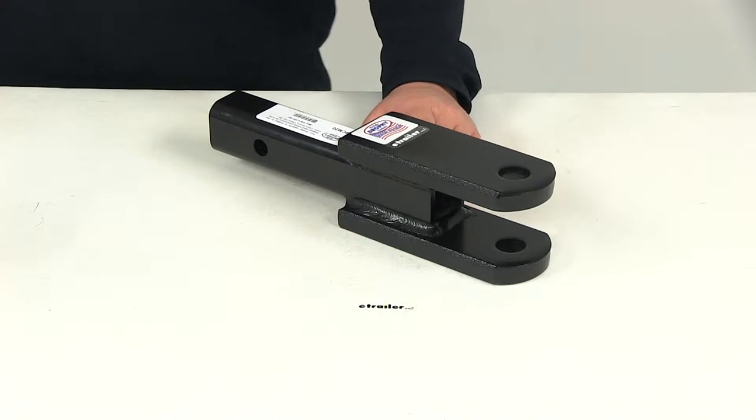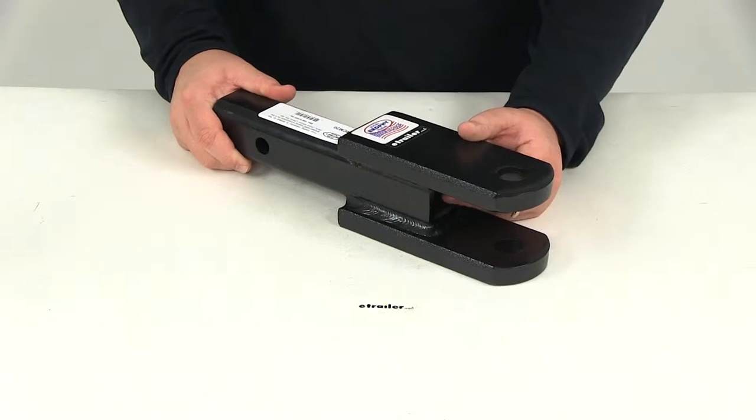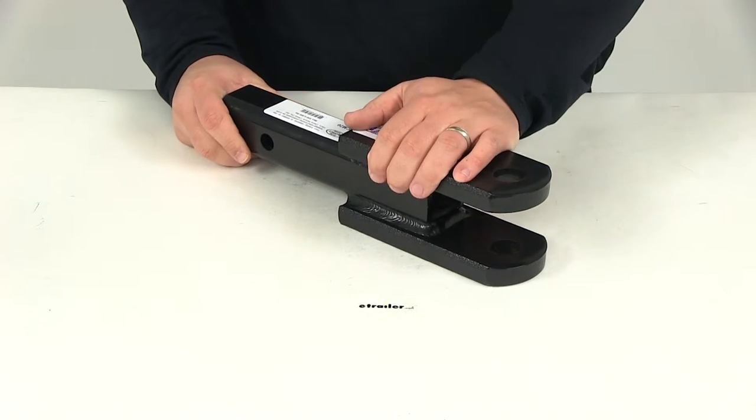Today we're going to be reviewing part number CM20. This is the Brophy clevis mount for two-inch trailer hitches. It's going to be rated at 6,000 pounds.